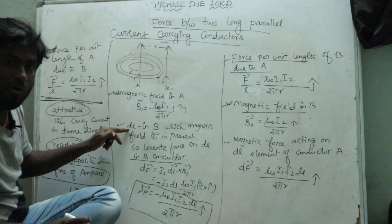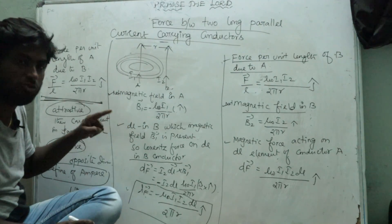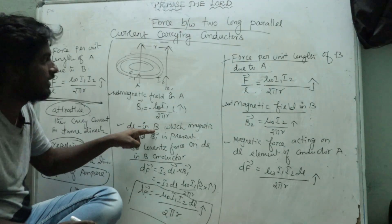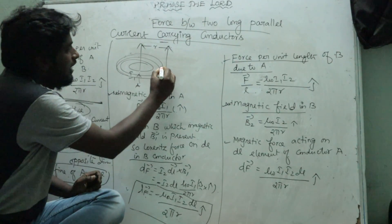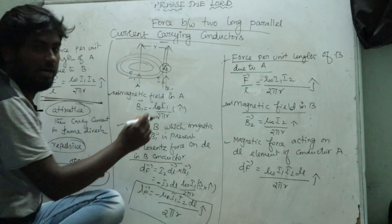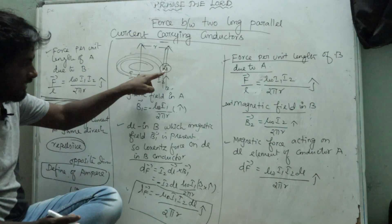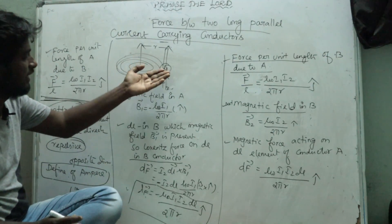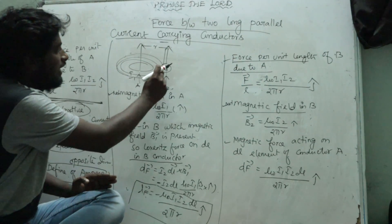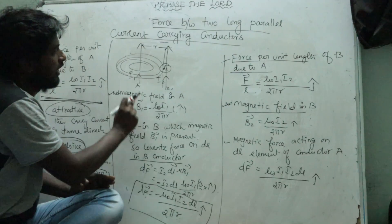DL is a small element present in conductor B. This small element DL is in conductor B, where the magnetic field B1 is also present. So the magnetic field B1 has an influence on the small element DL in conductor B.